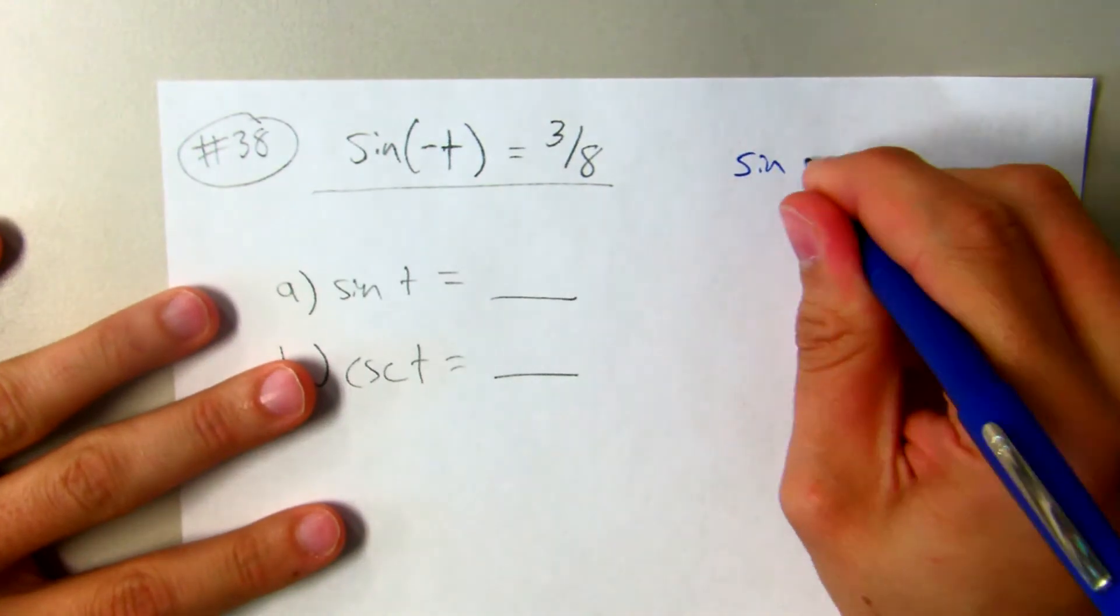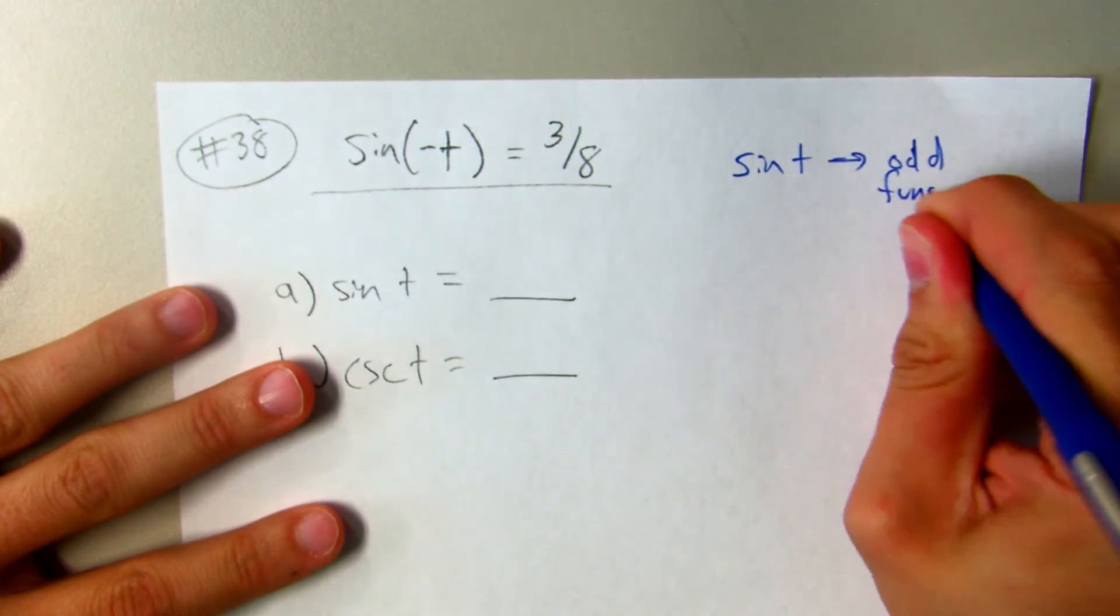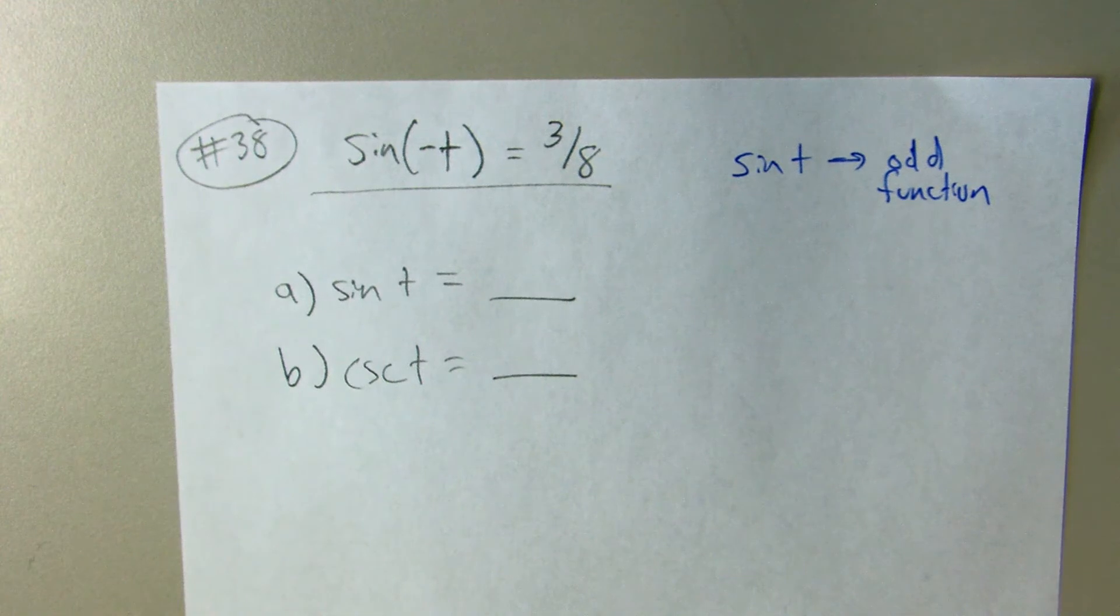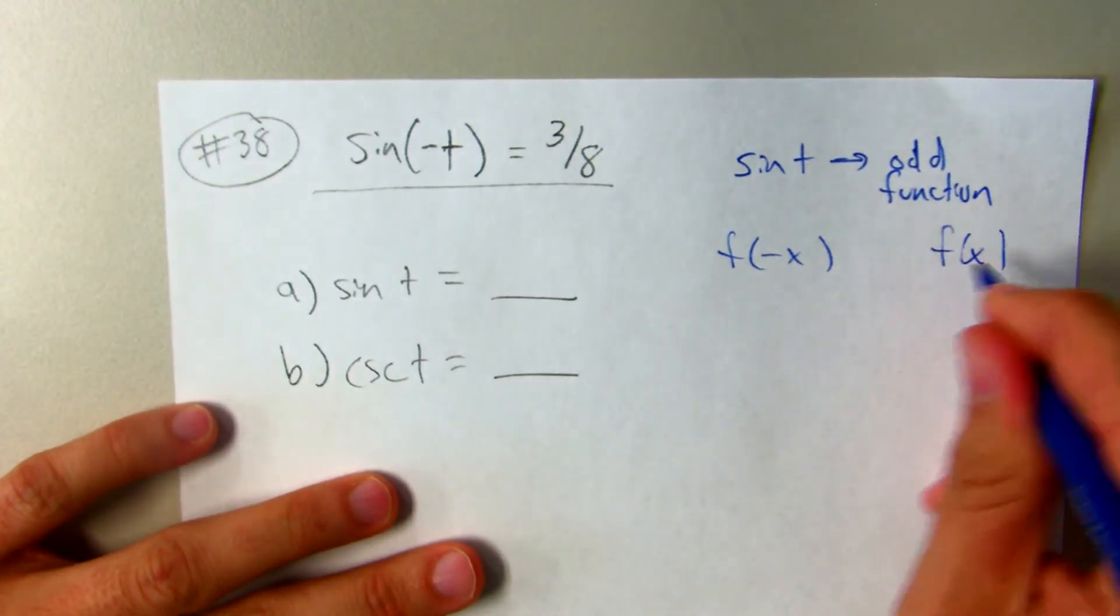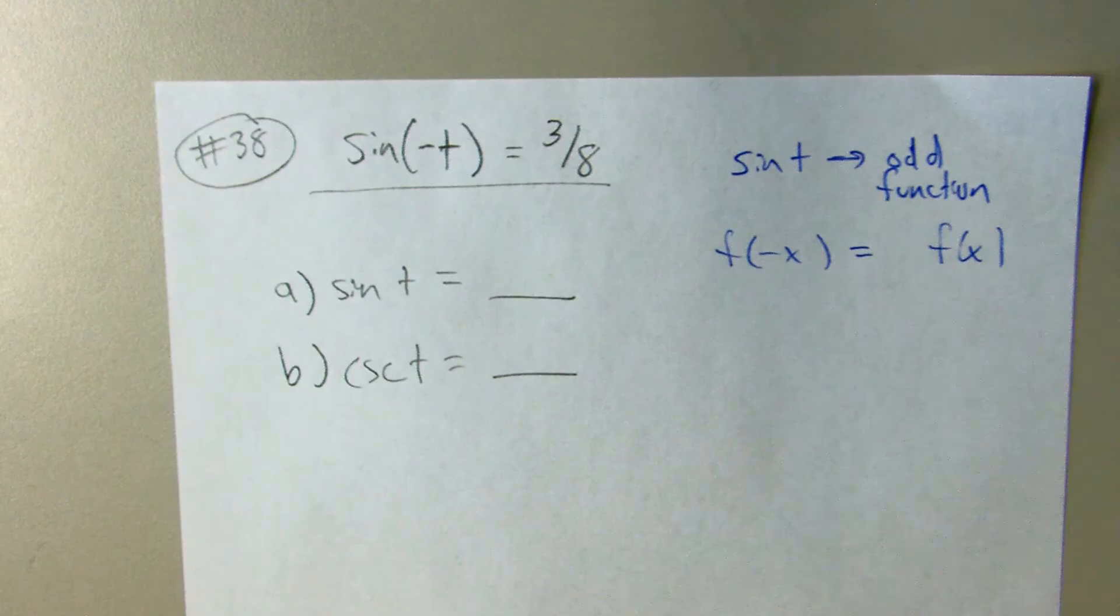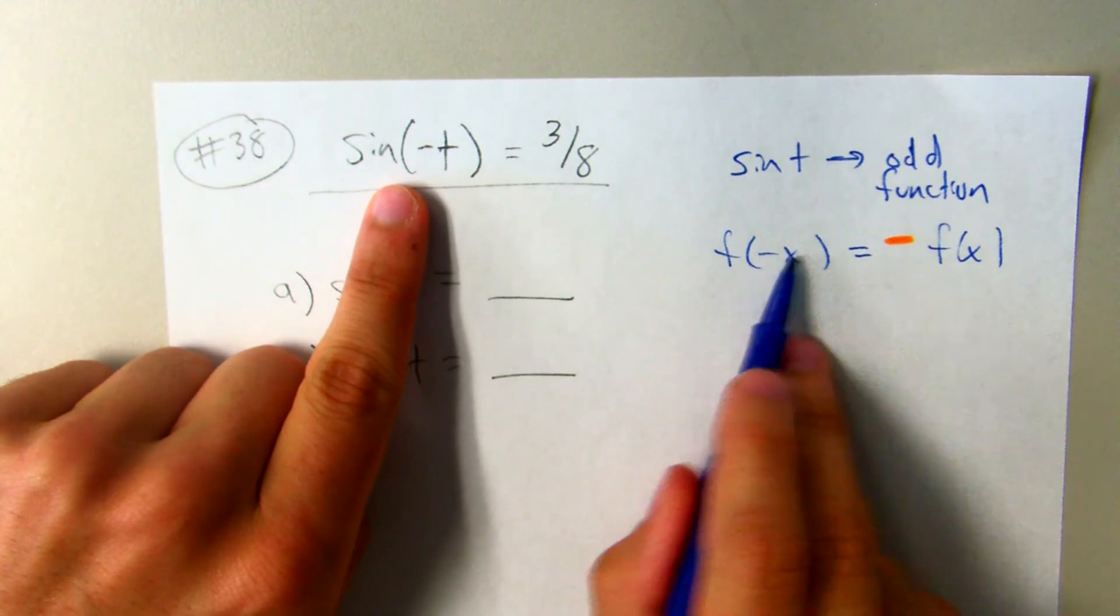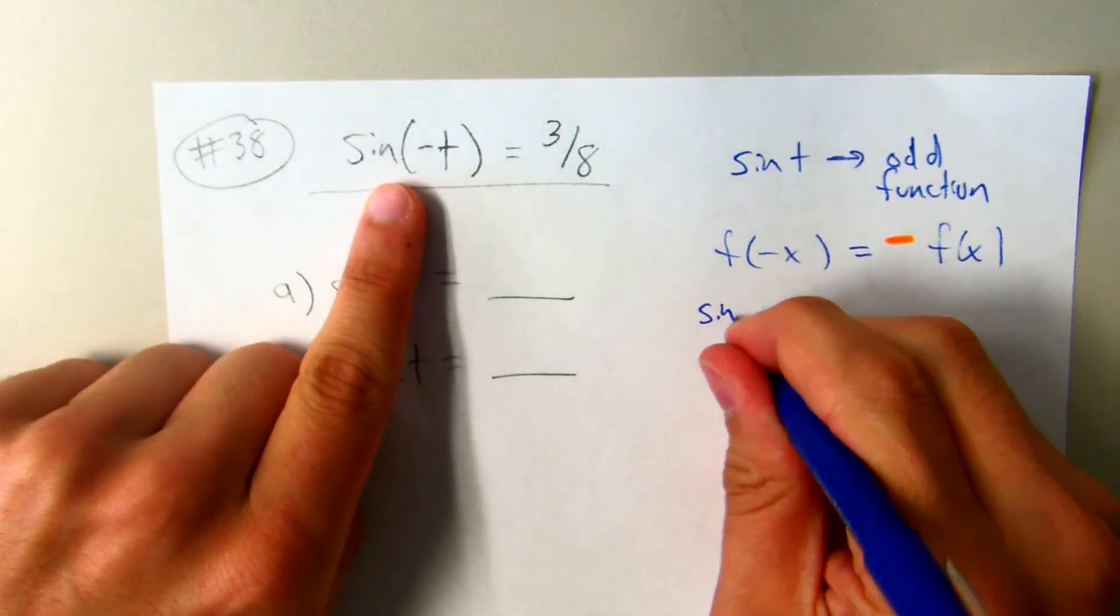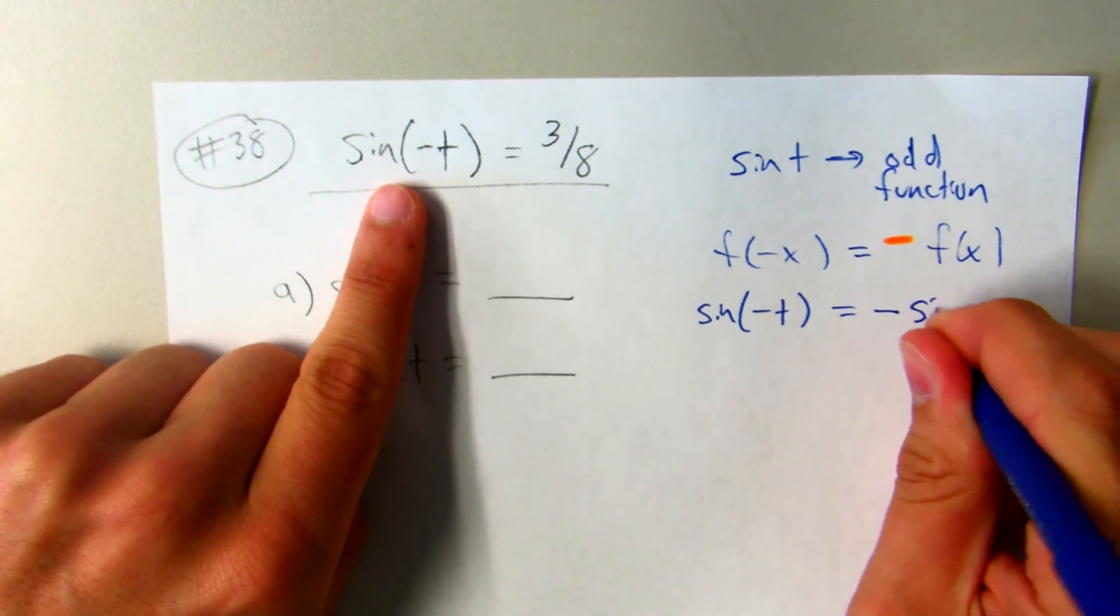So sine is an odd function. In algebra, what it means to be odd is if you plug in negative x compared to positive x, it can't be equal because that's what it means to be an even function. They're equal in size, so one's the opposite. So how does that apply to this question? The sine is odd, so this still applies.